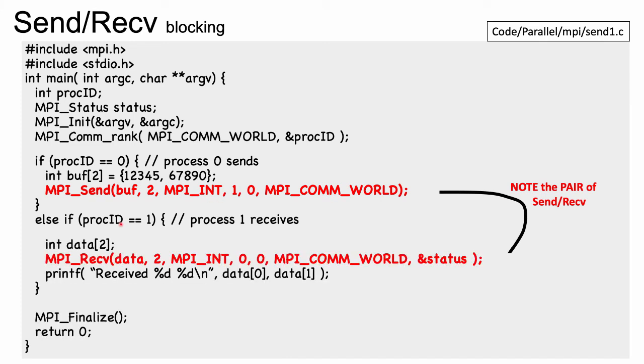Finally, on the other end, we have process ID equals one. He's going to sit there and receive data. Again, an integer array of size two. MPI_recv into that address of that buffer or that array. Two integers. He's receiving from process ID zero. The tag again is zero. MPI_COMM_WORLD. And then this status. The status we'll talk about again in two slides. And then process ID one will print out the message that he received. And he'll show the two integers that he received. MPI_finalize return zero.